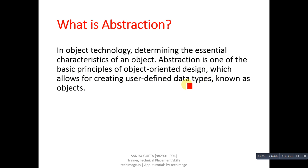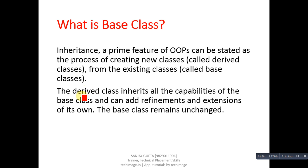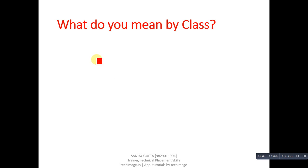Next question: what is base class? In inheritance — a prime feature of object-oriented programming — new classes called derived classes are created from existing classes called base classes. The derived class inherits all the capabilities of the base class and can add refinements and extensions of its own, while the base class remains unchanged.